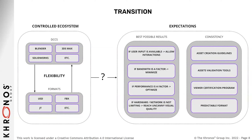Zooming in on the transition: the controlled ecosystem uses DCCs like Blender, 3ds Max, or SolidWorks for engineering data. For flexibility, formats like USD, FBX, and JT allow you to store content in a lossless form and transmit it between DCCs. But how do we transition away from authoring flexibility and meet all the delivery expectations? Best possible results is not one thing — it depends. If bandwidth is a factor, minimization of the asset is key. If performance matters, optimization is critical. If there are no hardware or network limitations, highest visual quality is the goal.